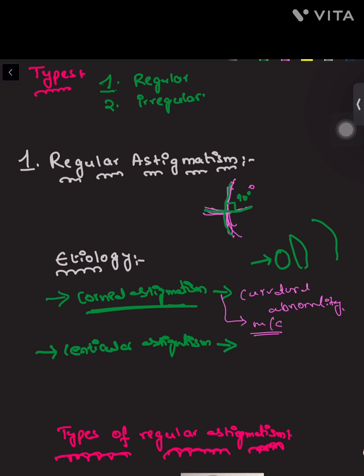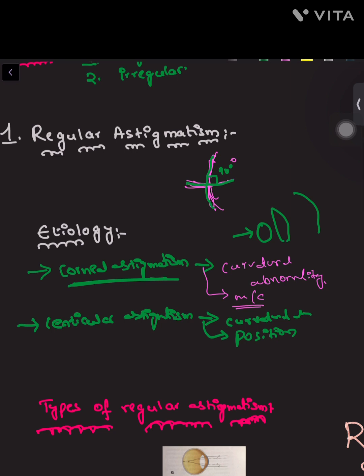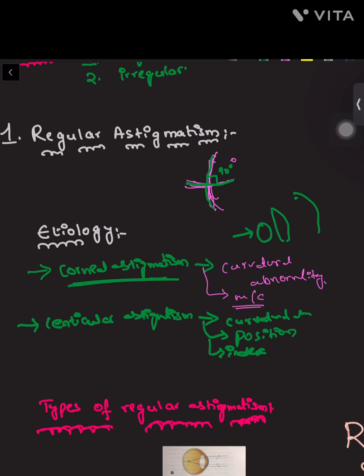For lenticular astigmatism, the causes include: curvature abnormality, where due to change in the radius of curvature the power changes and refraction varies; positional, due to change in position of the lens; and index, meaning a change in the refractive index will cause a change in power.